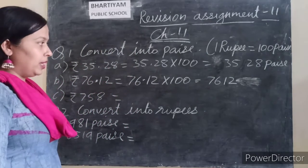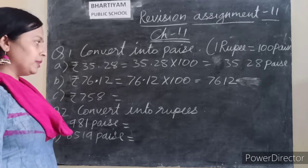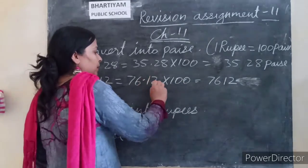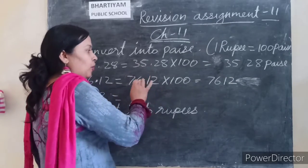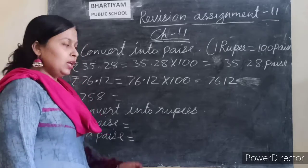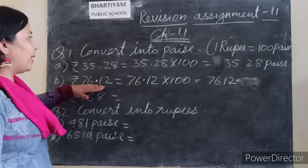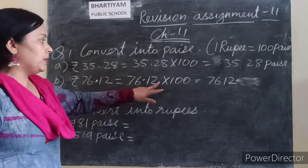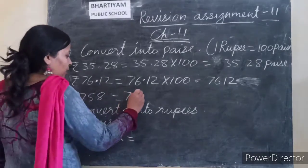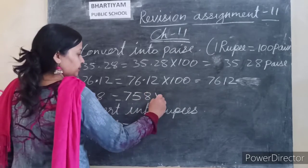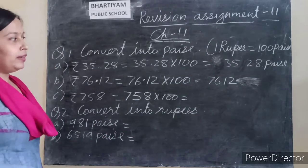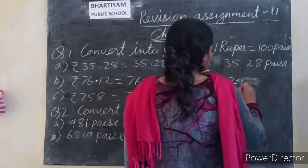We will study this in detail in class 5. For now, just remember: when multiplying by 100, the point moves two places. So if there is already a point in the number, the point shifts two places to the right in this question.